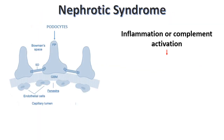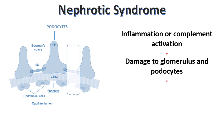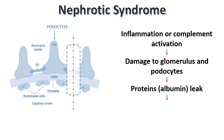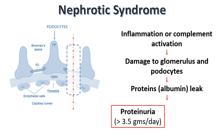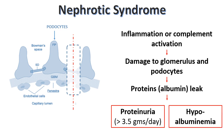In nephrotic syndrome, due to inflammation or complement activation, there is damage to the glomerulus and also damage to podocytes. Due to this damage, proteins including albumin will leak through the glomerulus and will be excreted in urine — this is called proteinuria. Protein is excreted more than 3.5 grams per day, and this also leads to hypoalbuminemia.